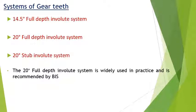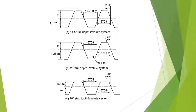There are three standard systems for the gear tooth profile: the 14.5 degree full depth involute system, the 20 degree full depth involute system, and the 20 degree stub involute system. Here 14.5 degree and 20 degree represent the pressure angle. The 20 degree full depth involute system is widely used in practice and is recommended by the Bureau of Indian Standards. The figure shows the basic racks for all three standard systems.